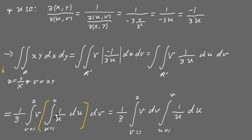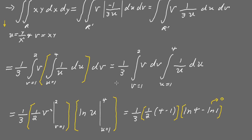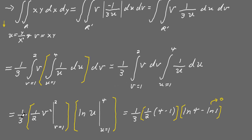We can factor out the constant 1/3. Since v is constant with respect to the u integration, we can bring v outside the inner integral. This gives (1/3) times the integral of v dv times the integral of 1/u du. Since the inner integral of 1/u from 1 to 4 is a constant, we can bring it outside the v integration entirely. So the whole thing becomes (1/3) times the integral from 1 to 2 of v dv times the integral from 1 to 4 of 1/u du, where the latter equals the natural log of u evaluated from 1 to 4.